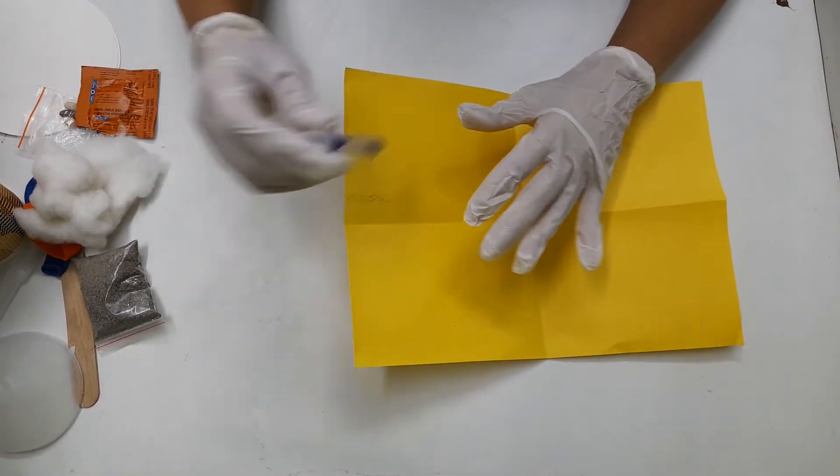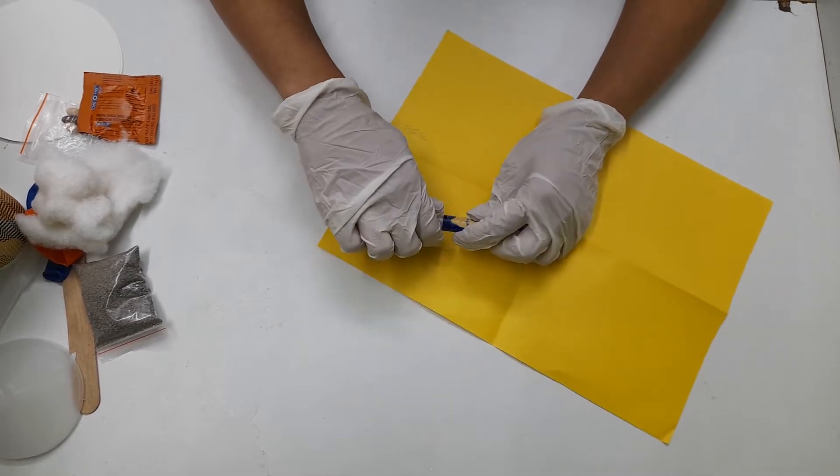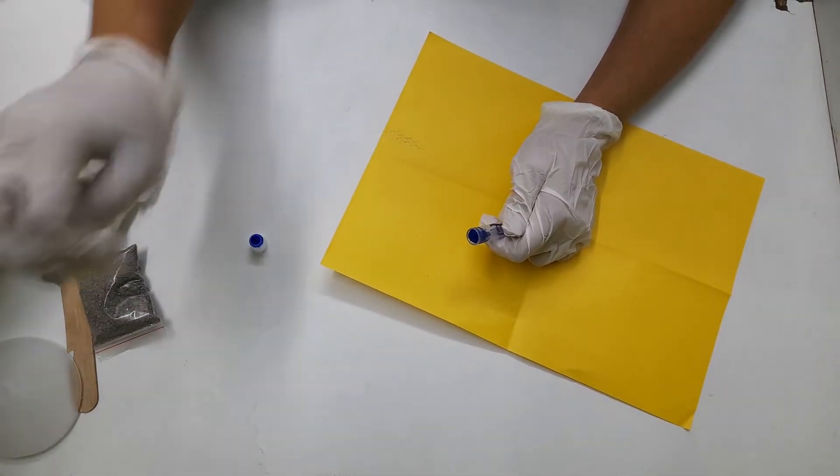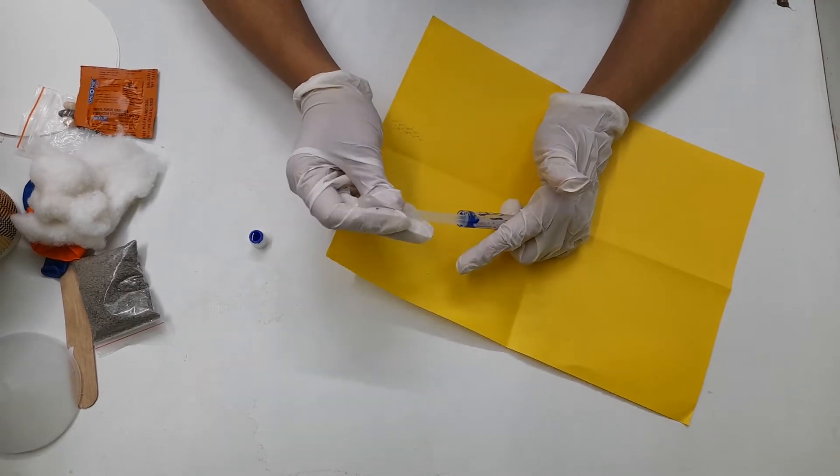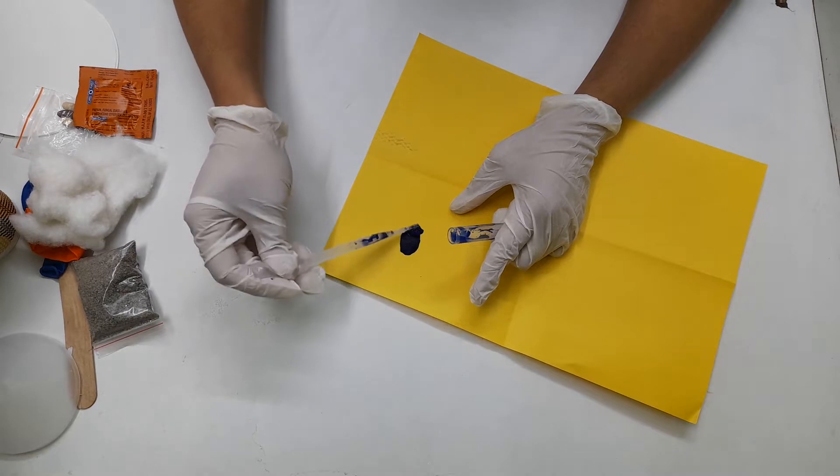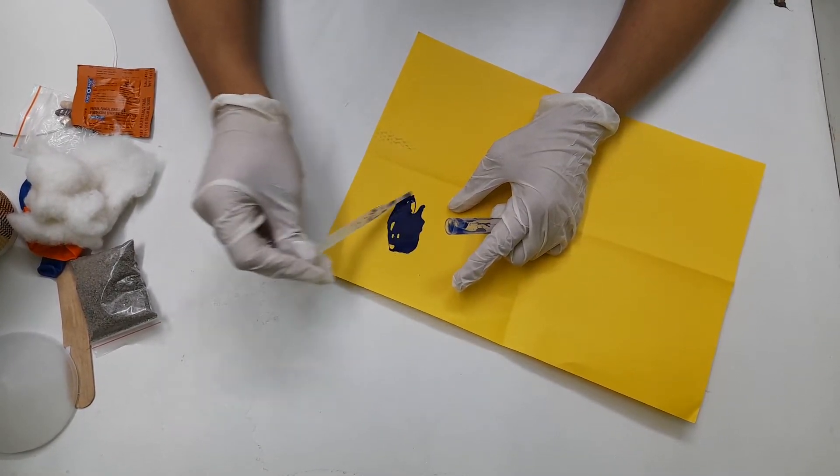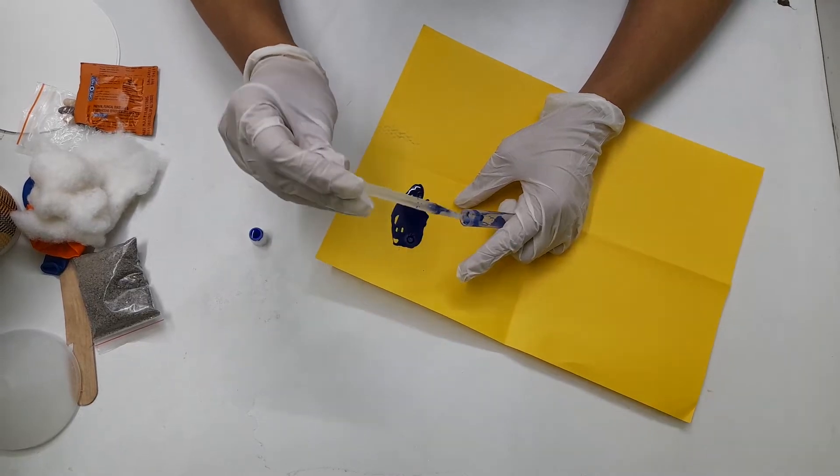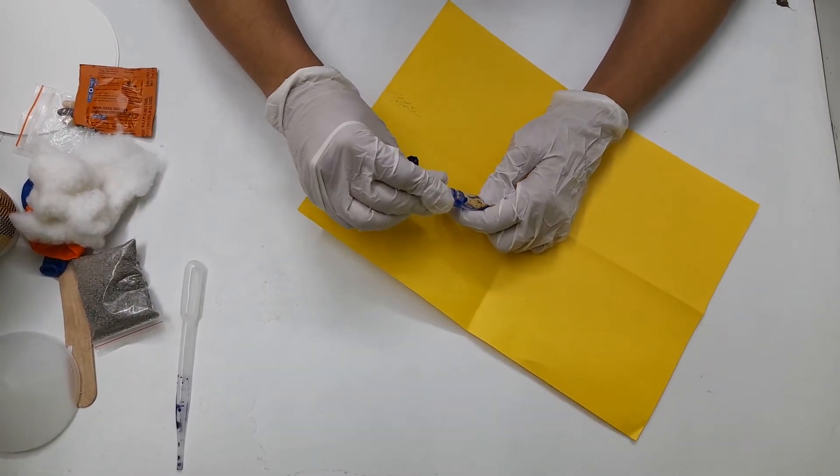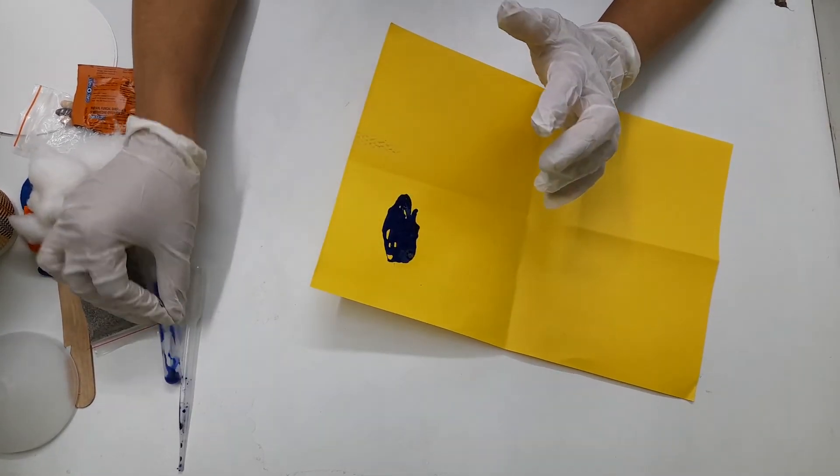But if I put a drop of ink onto the paper with the help of dropper or something else, then I can't reverse it back. So this is an example of an irreversible change or you can also tear this paper or you can burn this paper if you want to check an irreversible change.